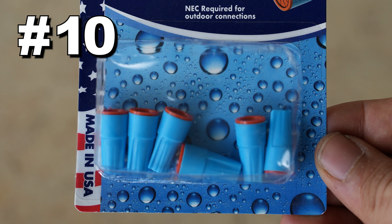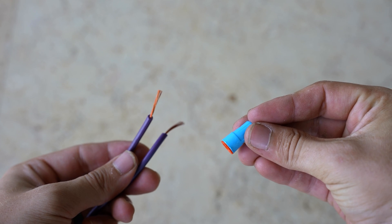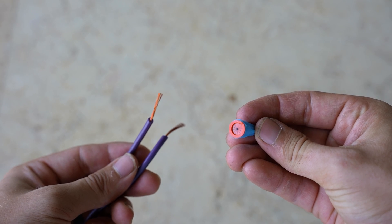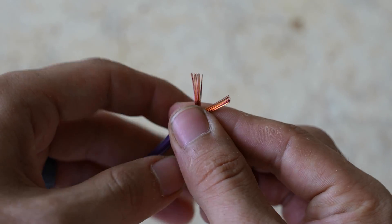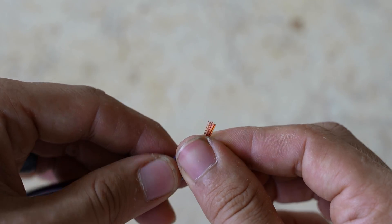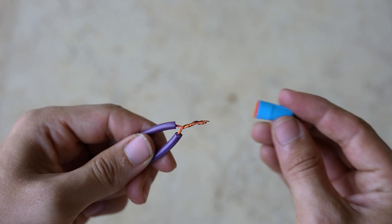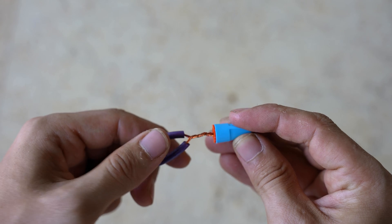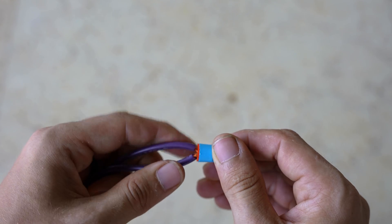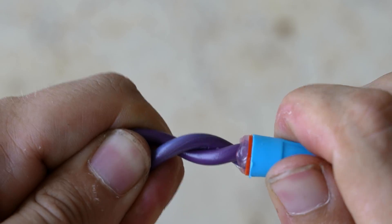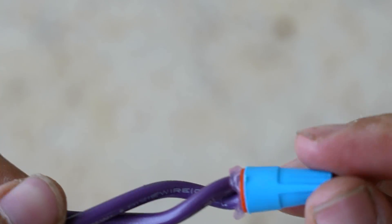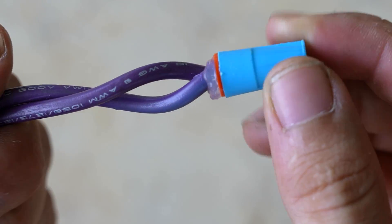Number ten is waterproof connectors. These are basically wire nuts that are filled with silicone. With this one, I do like to pre-twist my wires as it makes it easier to push them into the wire nut and get it started. In my opinion, this right here is the best waterproof connector, since the bare wires are encased in silicone and some of it also gets squeezed outside of the wire nut, preventing any water from getting in.